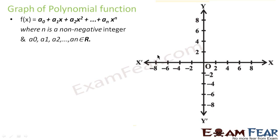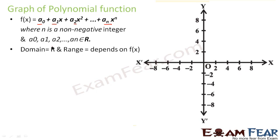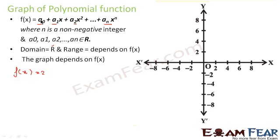Now let's look at the polynomial function. A polynomial function has the form a₀ + a₁x + a₂x² + … + aₙxⁿ, where n is a non-negative integer and a₀, a₁, a₂, … are real numbers. The domain is ℝ, but the range depends on the specific function. For example, let's take f(x) = x² + x + 2.